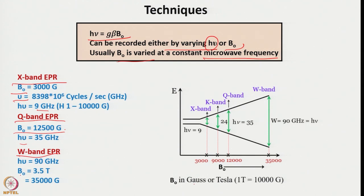In the E versus B₀ plot, the energy value steadily increases as you go from X-band to W-band because of the increase in the overall magnetic field strength. As magnetic field strength increases, the energy required for spin transition and the microwave radiation energy also increase. This gives a correlation between the various EPR bands — X, Q, and W — and the corresponding microwave frequencies employed.